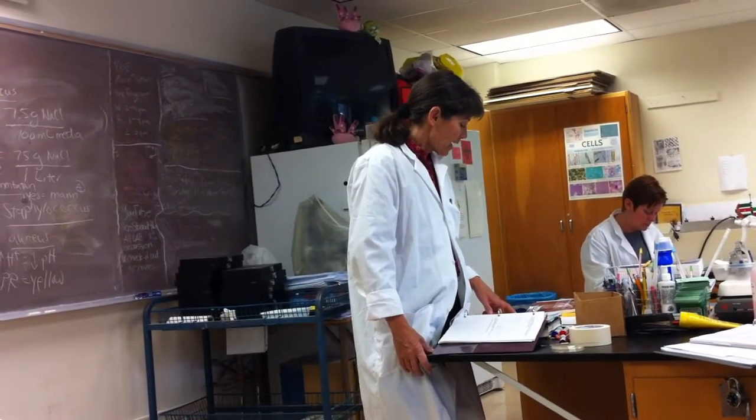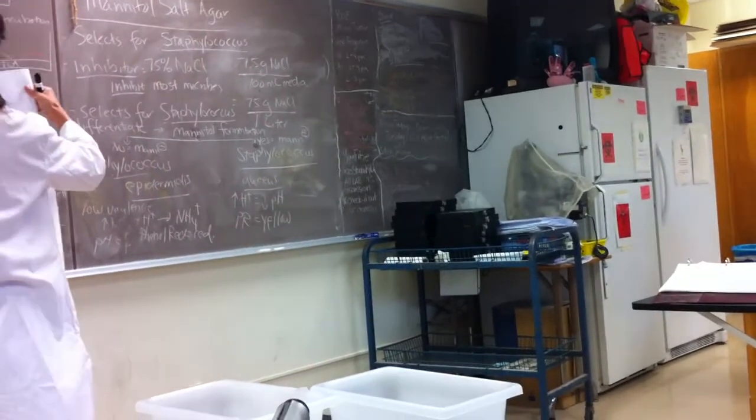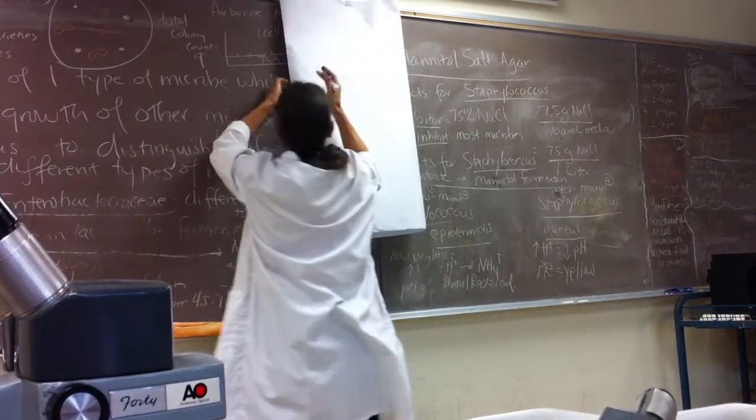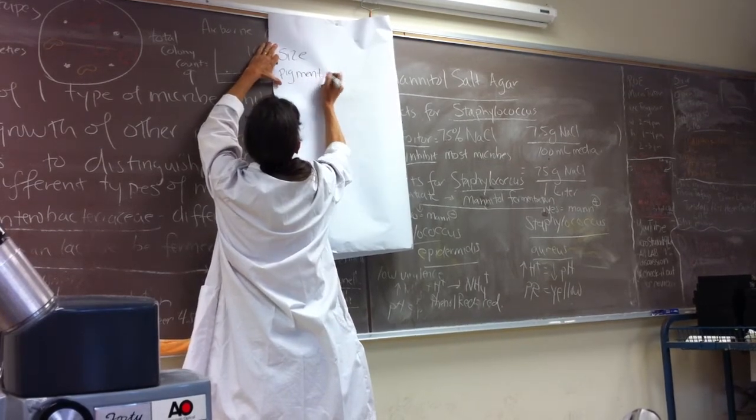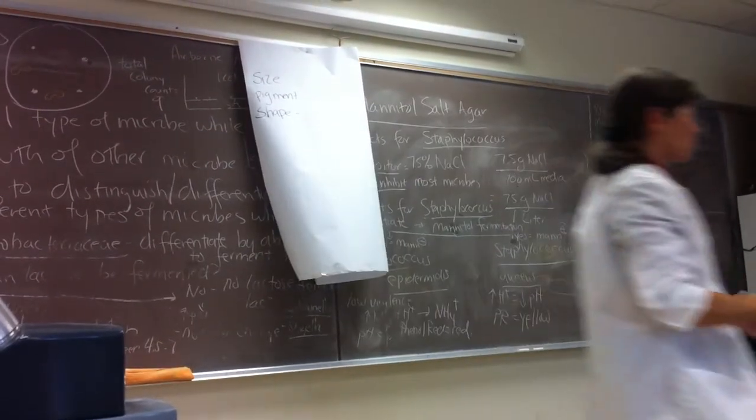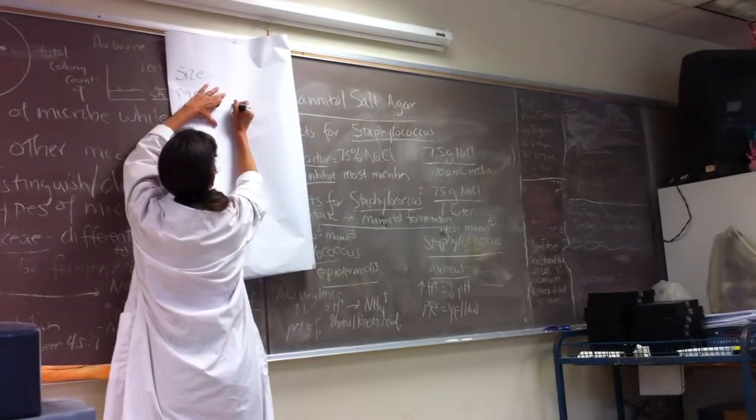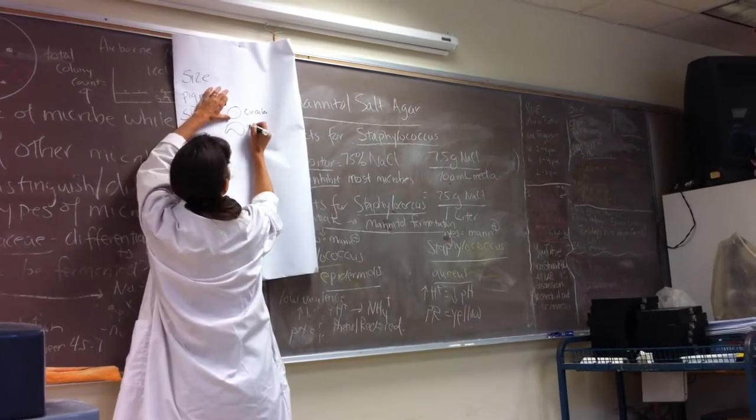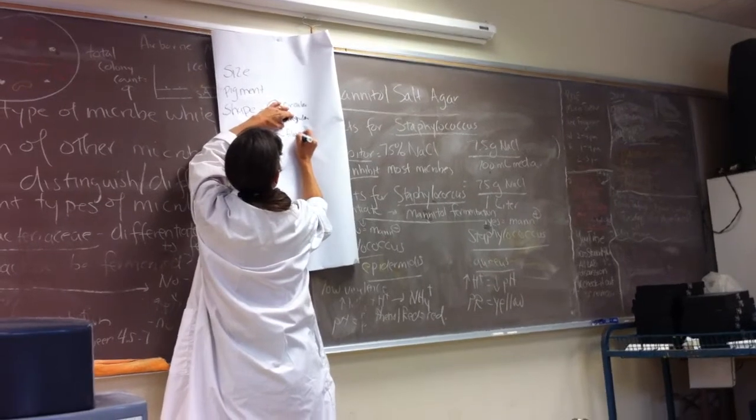We next go down to shape. And again, we're trying to simplify this. So we did size, we did pigment. And then shape, we're going to simplify to just three descriptive terms. We're using circular, irregular, or rhizoid or filamentous. So circular is just as it suggests. The overall shape is circular. Irregular is that if it's not a circle, something like that, irregular. And filamentous or rhizoid is like little branches or little roots. So this would be filamentous or rhizoid. You could use either term.